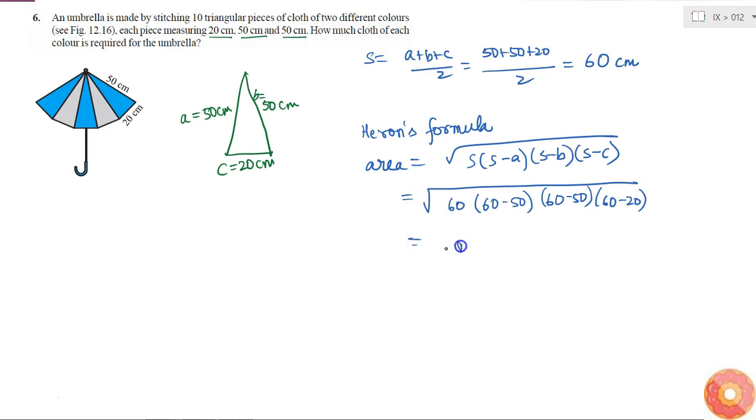So this is equal to square root over 60 into 10 into 10 into 40. So here I have 60, I can write it as 6 into 10, and 40 I can write it as 4 into 10. So here I have 10 into 10 into 10 into 10, which is 10 to the power 4. So square root over 10 to the power 4 is 10 square, multiplied by square root over 4 is 2, multiplied by square root over 6.